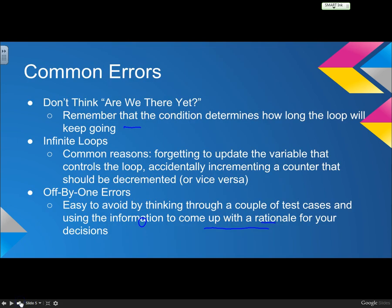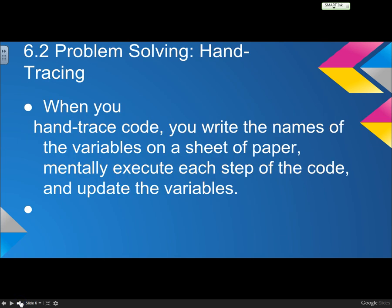Common errors: don't think about the loop not going where you want it to be, because you're the one that makes the loop. Second, infinite loops, we talked about that. And then off-by-one errors. You might put x equals zero, but in reality x equals one, because you have to be careful about where to start. And then the next section, hand tracing. Basically, you do the parts as you go just to make sure that it's working, and you can avoid the off-by-one errors because you're doing it yourself on paper.